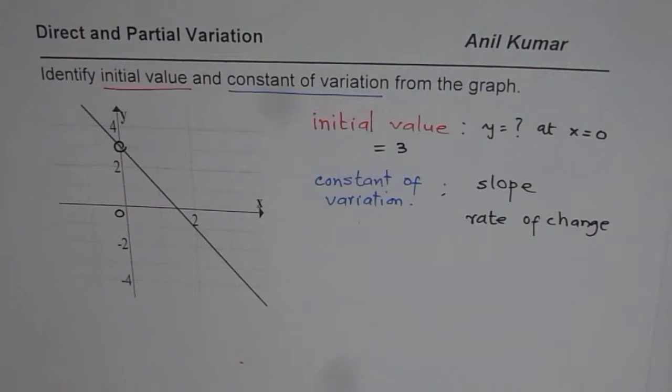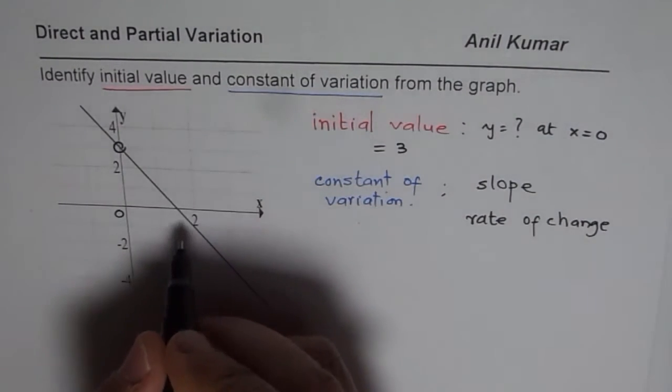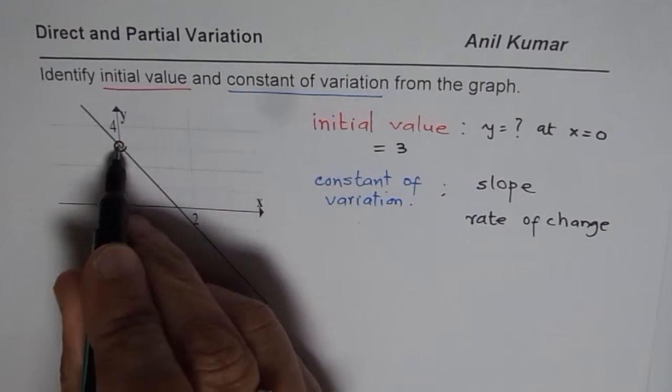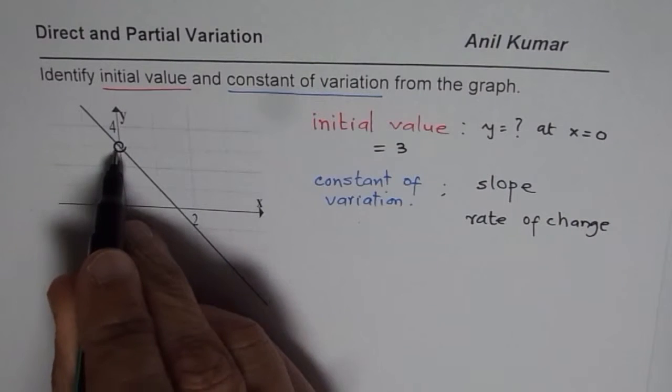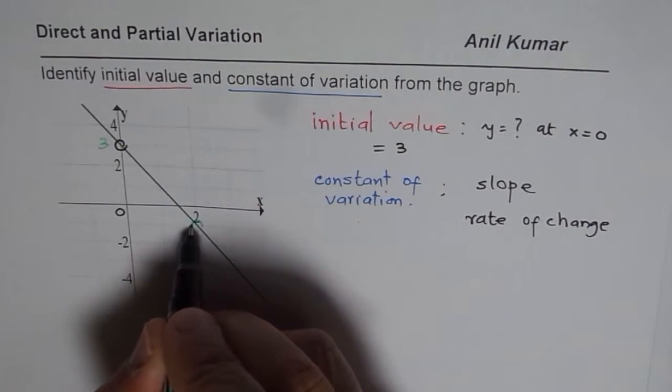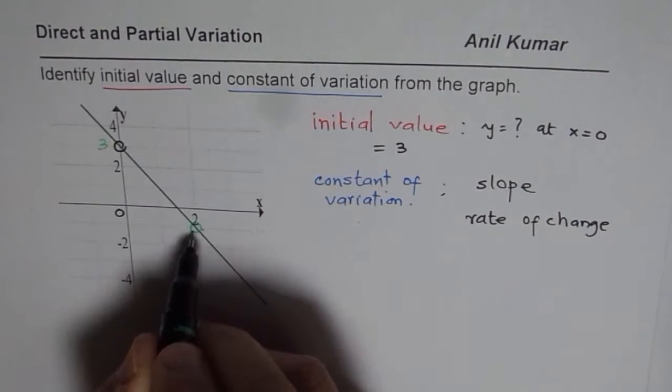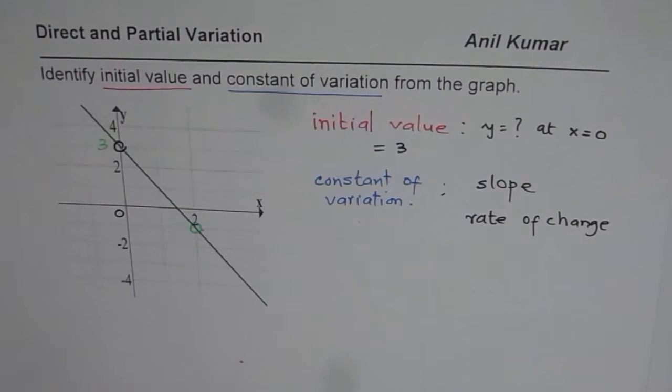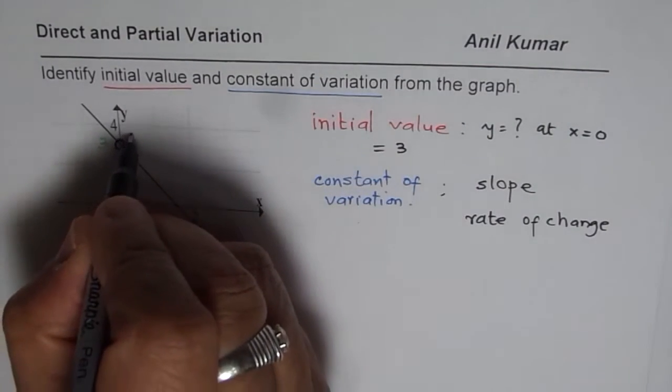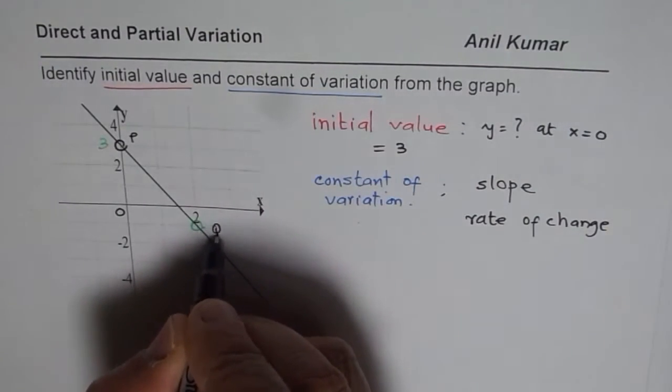From the graph, it is easy since you need to identify two good points. First one, we already have the initial value which is at 3, at y = 3. Then this is a good point you can accurately read. So we have these two points. Let us consider the points. Let me call these points as P and Q. These are my two points.